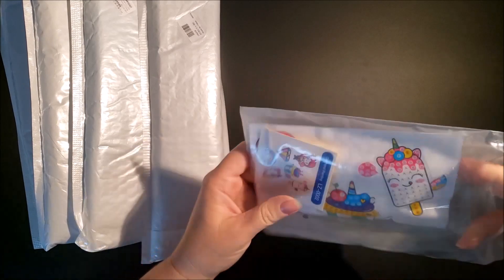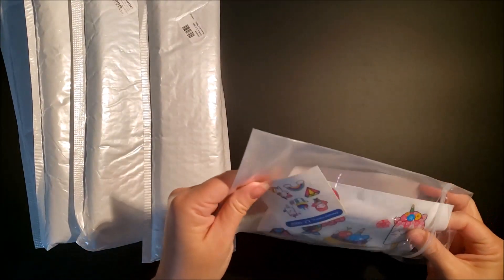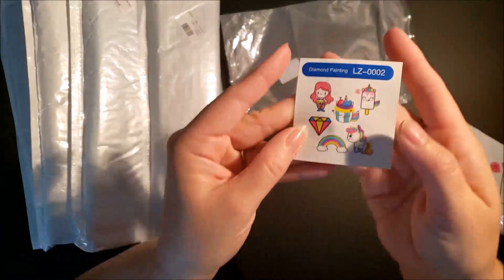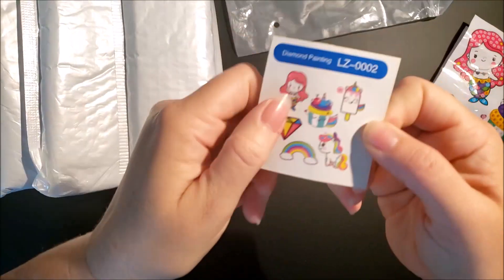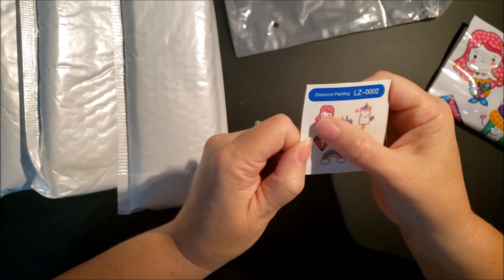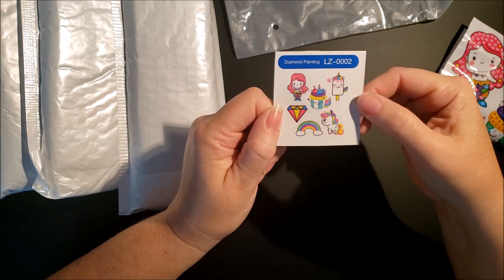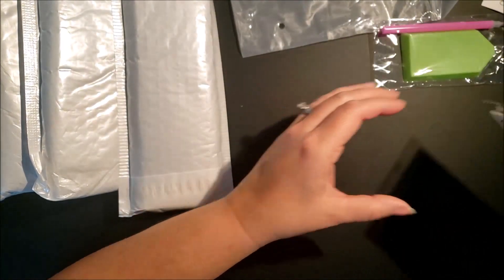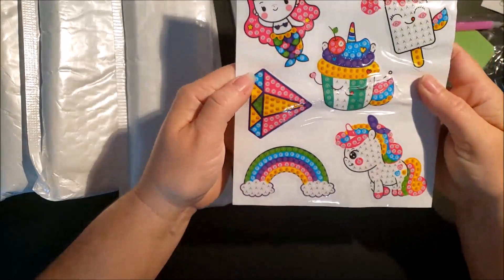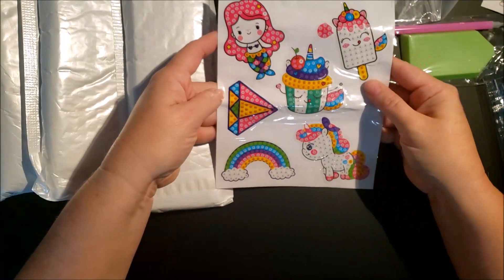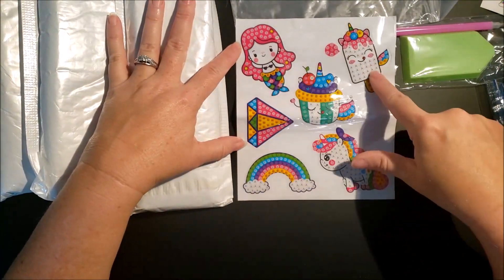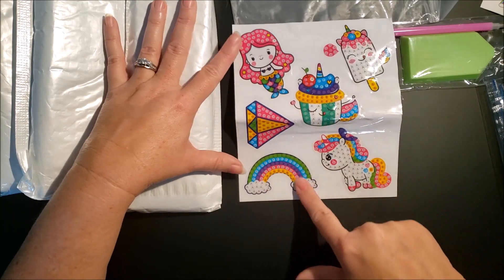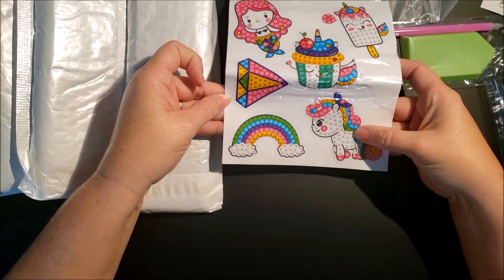We have these little stickers. I thought these would be cute to decorate your storage containers, make them a little bit more fun. I like the diamond one for diamond paintings so that is one of the reasons I chose this set. We have a little mermaid, popsicle and this looks like an ice cream sundae, diamond, rainbow and a unicorn.